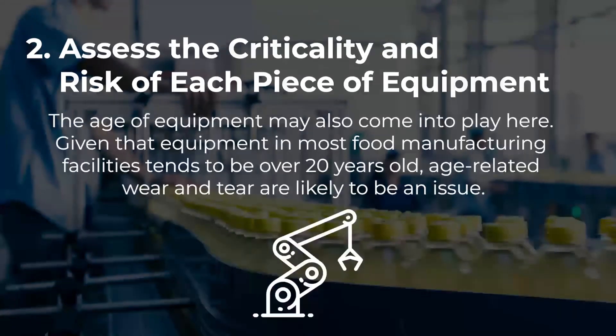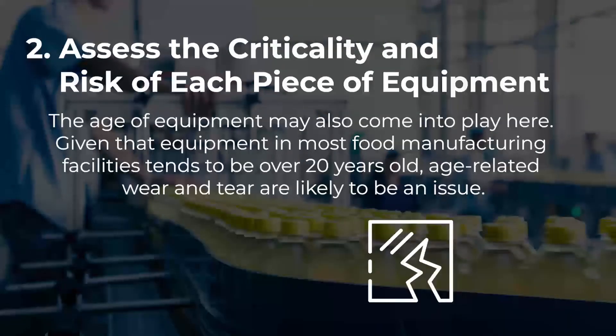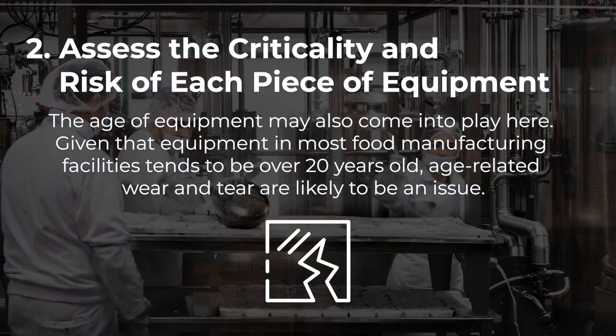The age of equipment may also come into play here. Given that equipment in most food manufacturing facilities tends to be over 20 years old, age-related wear and tear are likely to be an issue.